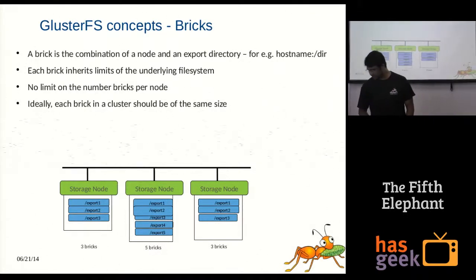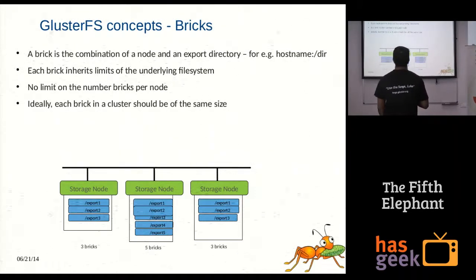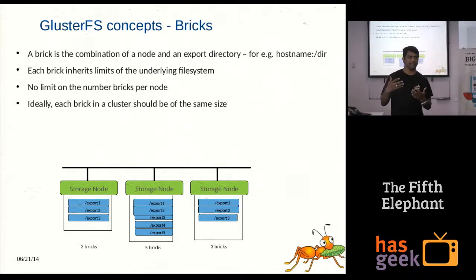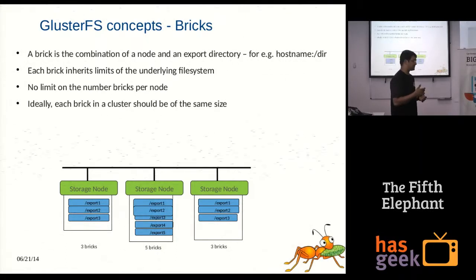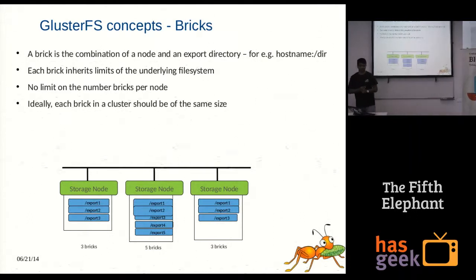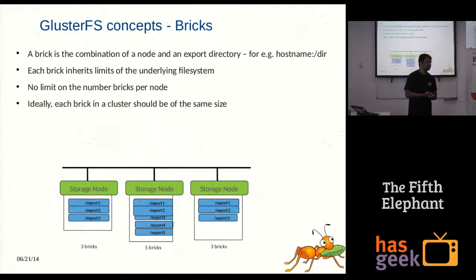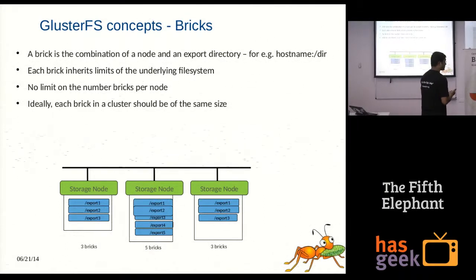The other concept is bricks. A brick is where the data actually resides. When you create a volume, you need to mention which bricks it should use — where exactly the data will be present on different servers. A brick consists of the server name and the partition or on-disk file system you will use for GlusterFS. There is no limit on how many bricks you can use per volume. The brick inherits the limits of the underlying file system — whatever on-disk file system you use, its size limitations apply.